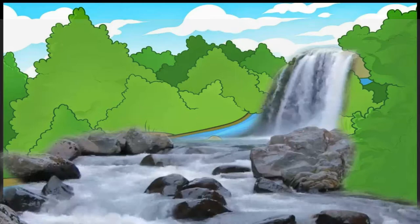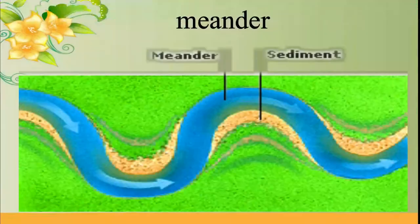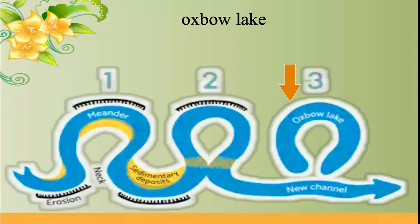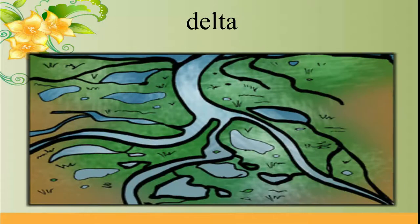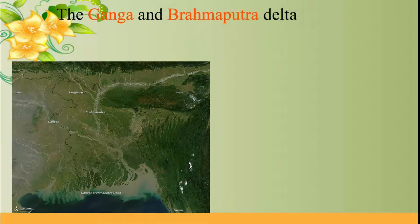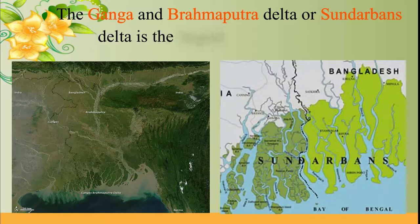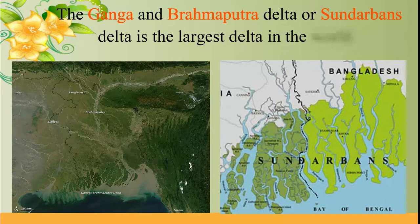from the mountains form features like meander, oxbow lake, delta, etc. The Ganga and Brahmaputra delta or Sundarbans delta is the largest delta in the world.